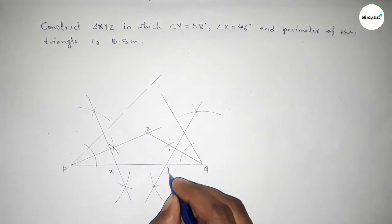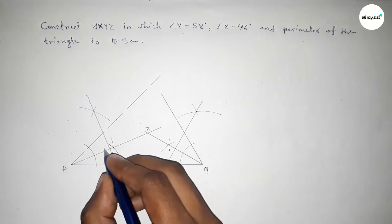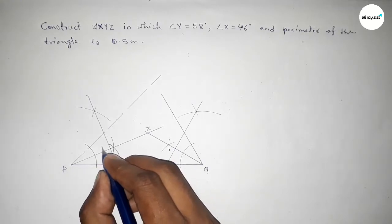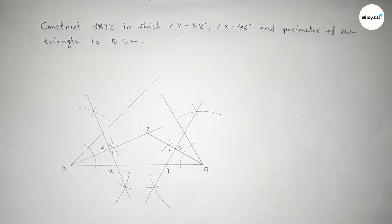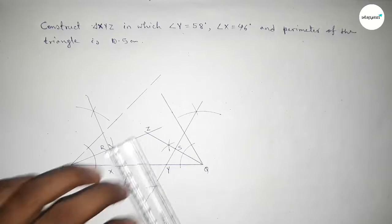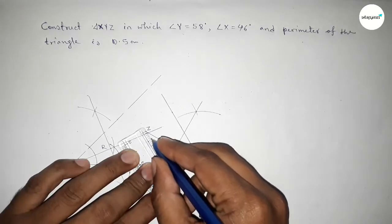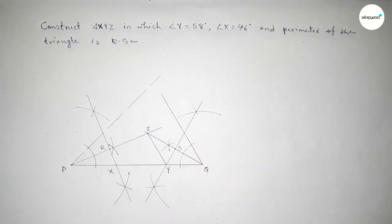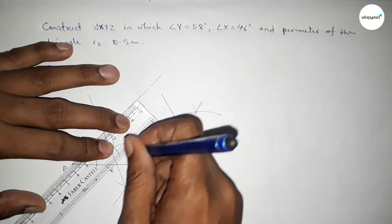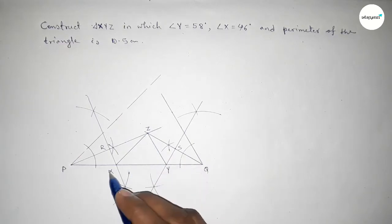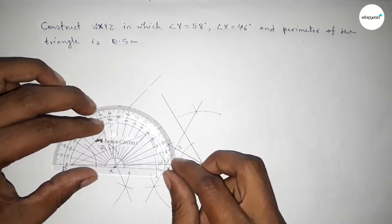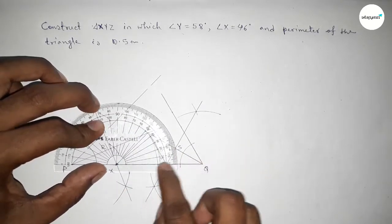The bisectors intersect the base line at points here and here. Taking point X here, point Y here, and marking points R and S on line PQ. Joining Z and Y, then joining X and Z to get the required triangle XYZ.